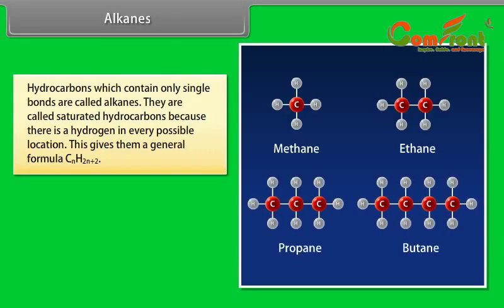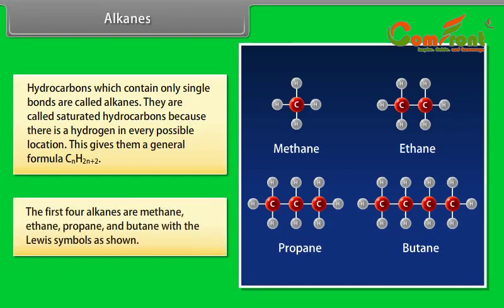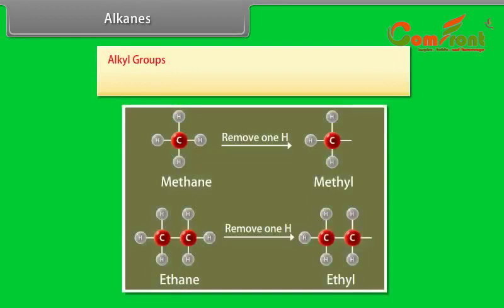Hydrocarbons which contain only single bonds are called alkanes. They are called saturated hydrocarbons because there is a hydrogen in every possible location. This gives them a general formula CnH2n+2. The first four alkanes are methane, ethane, propane and butane, with the Lewis symbol as shown.